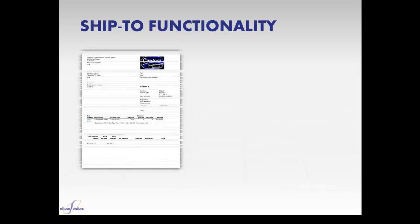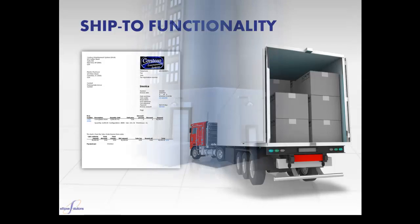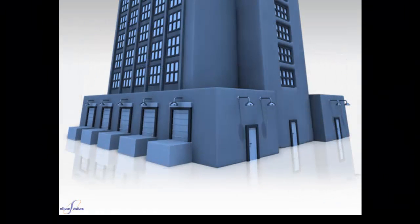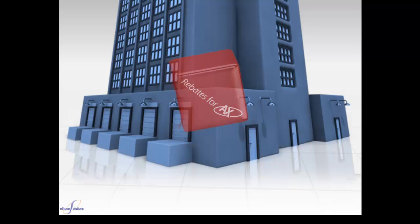The advanced ship-to functionality allows rebates to be calculated not only based on the invoice customer account, but also based on where the products are being delivered. So now that we've talked about it and a few of the benefits it delivers, let's see how it works at Contoso Corporation.